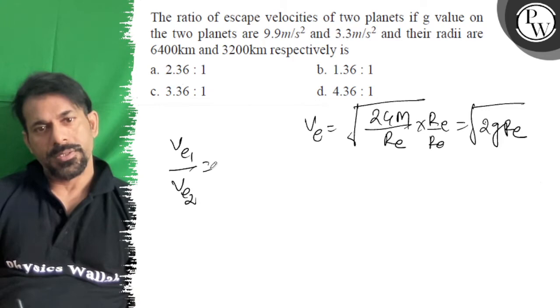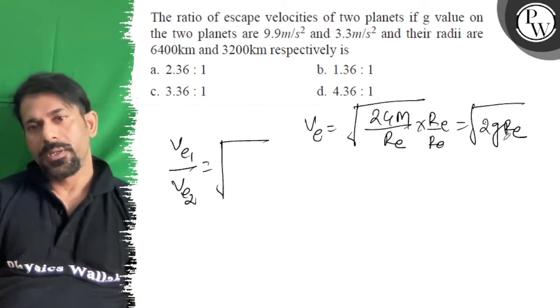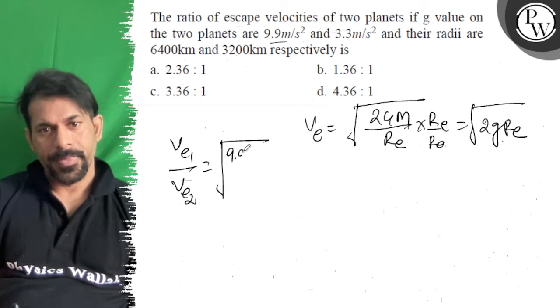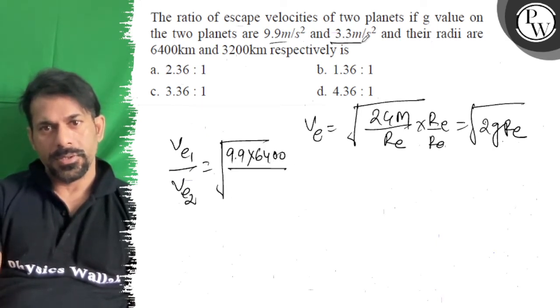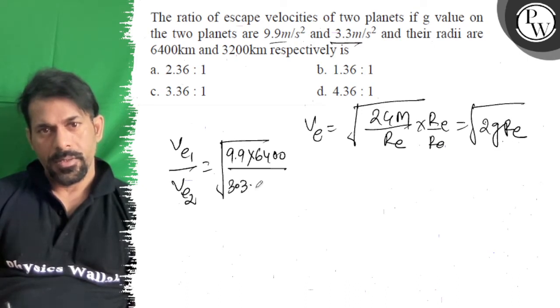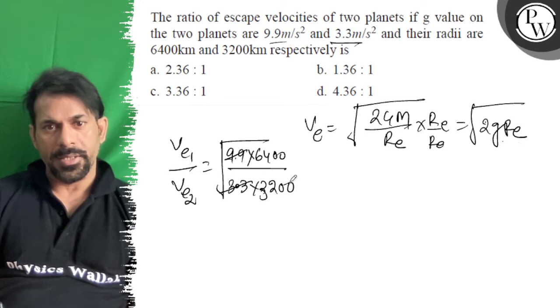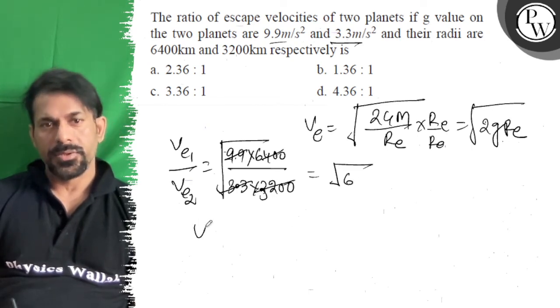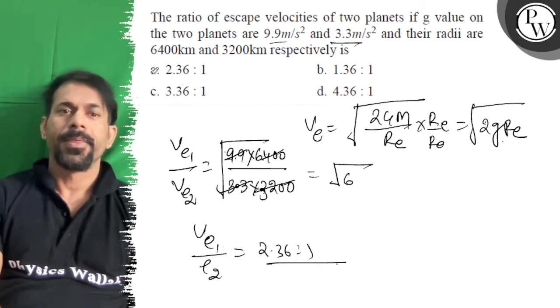Root of 9.9 into 6400 upon 3.3 into 3200. So it is root 6, so Ve1 upon Ve2 is 2.36. This is the correct answer, option a is correct.